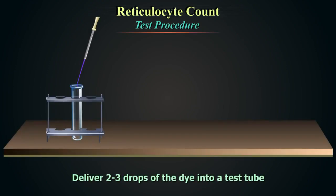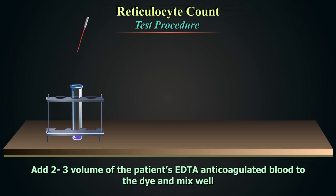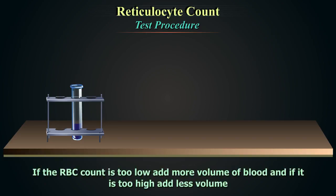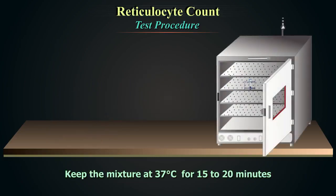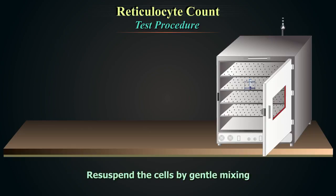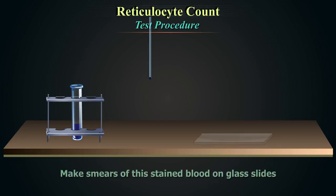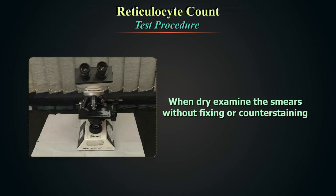Deliver 2-3 drops of dye into a test tube. Add 2-3 volumes of the patient's EDTA anticoagulated blood to the dye and mix well. If the red blood cell count is too low, add more blood; if too high, add less. Keep the mixture at 37 degrees centigrade for 15 to 20 minutes. Resuspend the cells by gentle mixing, then make smears on glass slides. When dry, examine the smears without fixing or counter-staining.